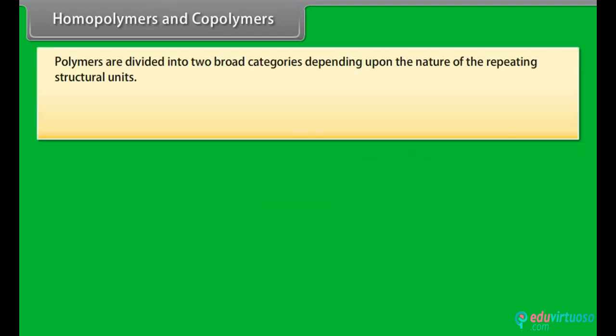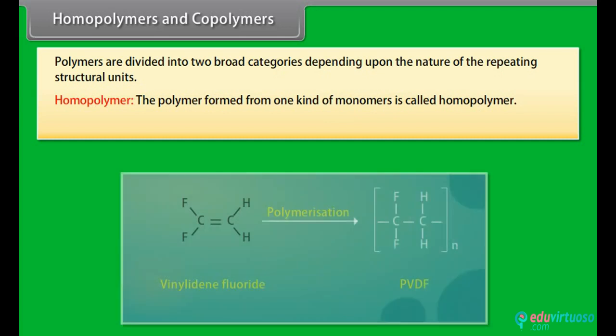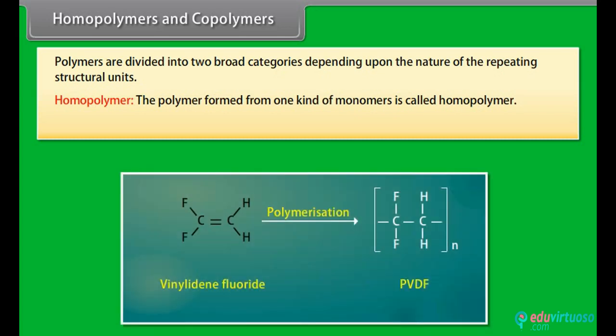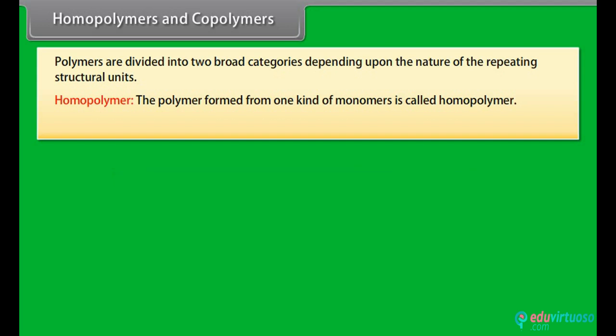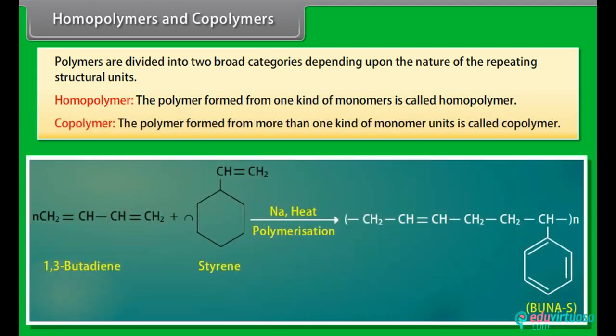Polymers are divided into two broad categories depending upon the nature of the repeating structural units. Homopolymer: the polymer formed from one kind of monomer is called a homopolymer. For example, PVDF is formed by vinylidene fluoride. Copolymer: the polymer formed from more than one kind of monomer units is called a copolymer. For example, Buna-S rubber is formed by 1,3-butadiene and styrene.